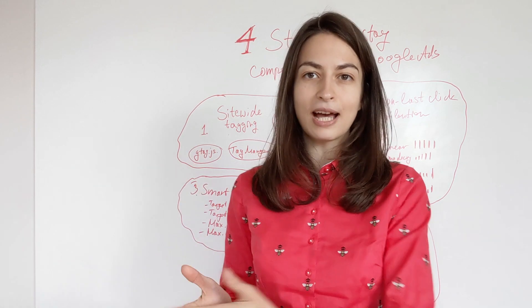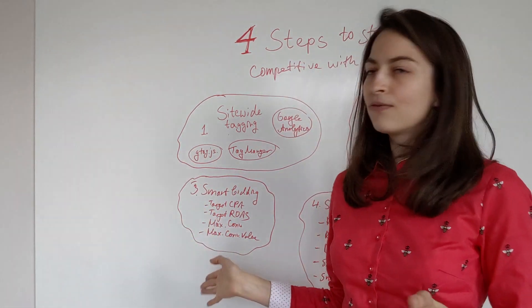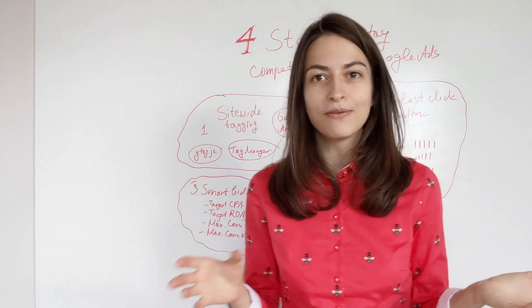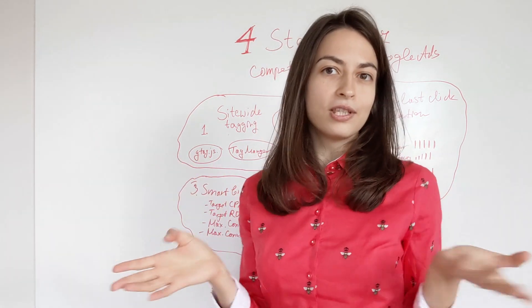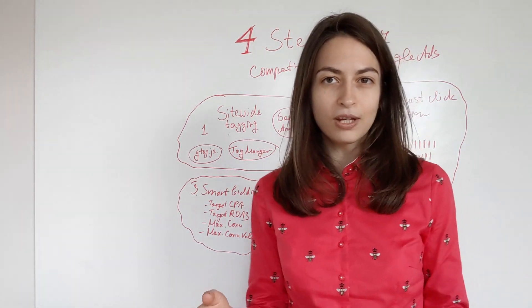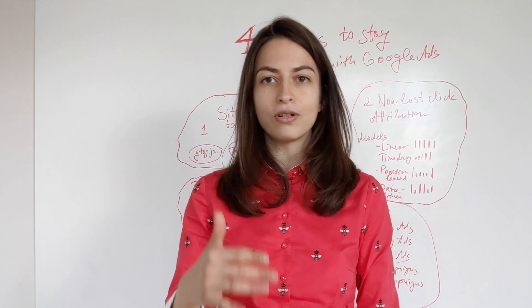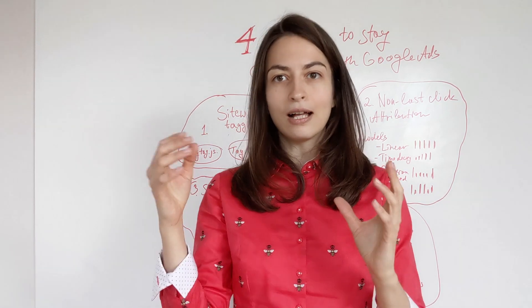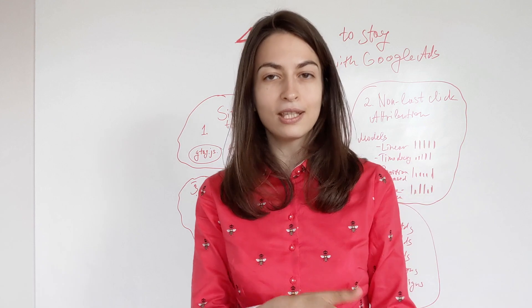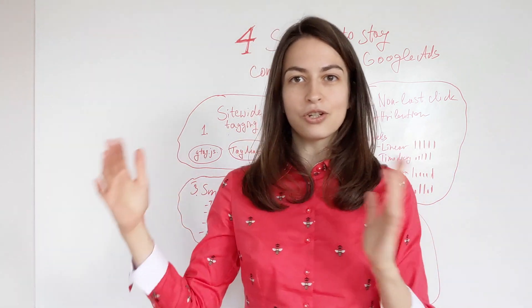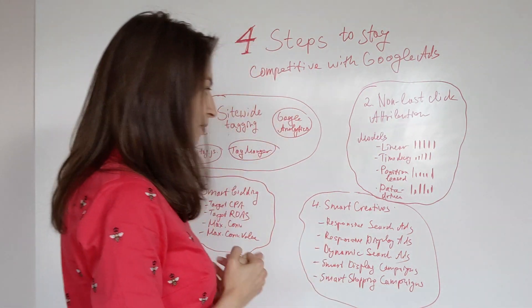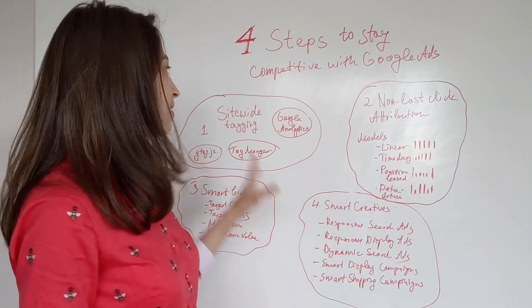So you can decide whether it's target CPA—target cost per acquisition—meaning that you only want to have a certain cost for every conversion on your website, and this is what Google is trying to get. You have maximize conversions, so meaning that you only want to spend this budget and you want to get the maximum amount of conversions for this budget at any cost. So this is what Google is trying to do. You have target ROAS, or target return on ad spend for e-commerce. So let's say you want to get the maximum return—you know how much this product is going to be sold for, so you want to spend this amount of ad budget for it, no more than that. So you get this kind of percentage of return. So Google is trying to do exactly this for you. Pretty, pretty smart with all these strategies. It's really great to implement.